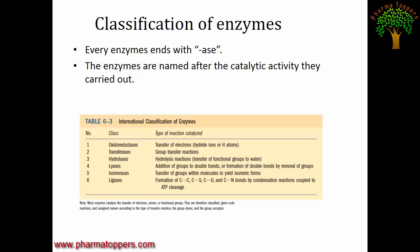For the classification of enzymes: every enzyme name ends with '-ase', and enzymes are named after the catalytic activity they carry out. For example, those that carry out hydrolysis are called hydrolases; those that carry out redox reactions are called oxidoreductases; those that transfer groups are called transferases.